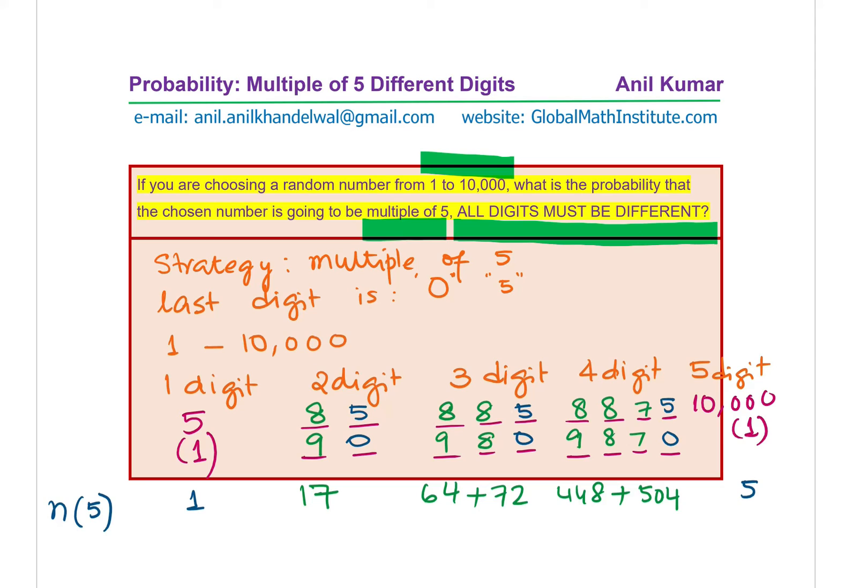So these are the total numbers which are favorable. Now we can add them up to get the total favorable. So n(5) will be 1 plus 17 plus 64 plus 72 plus 448 plus 504 plus 1. And that number is the total favorable cases for this.